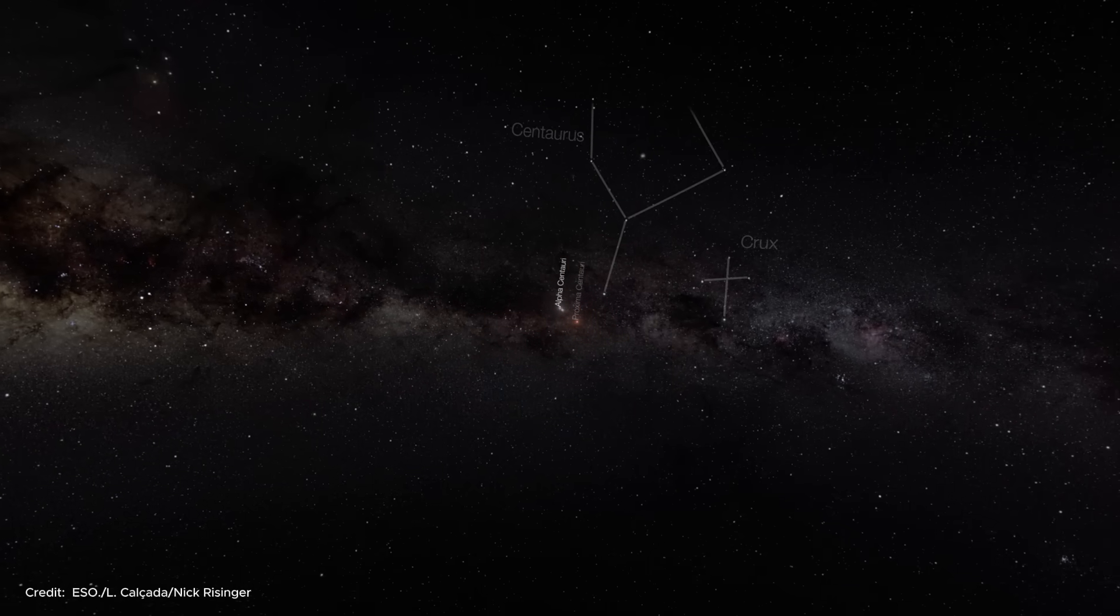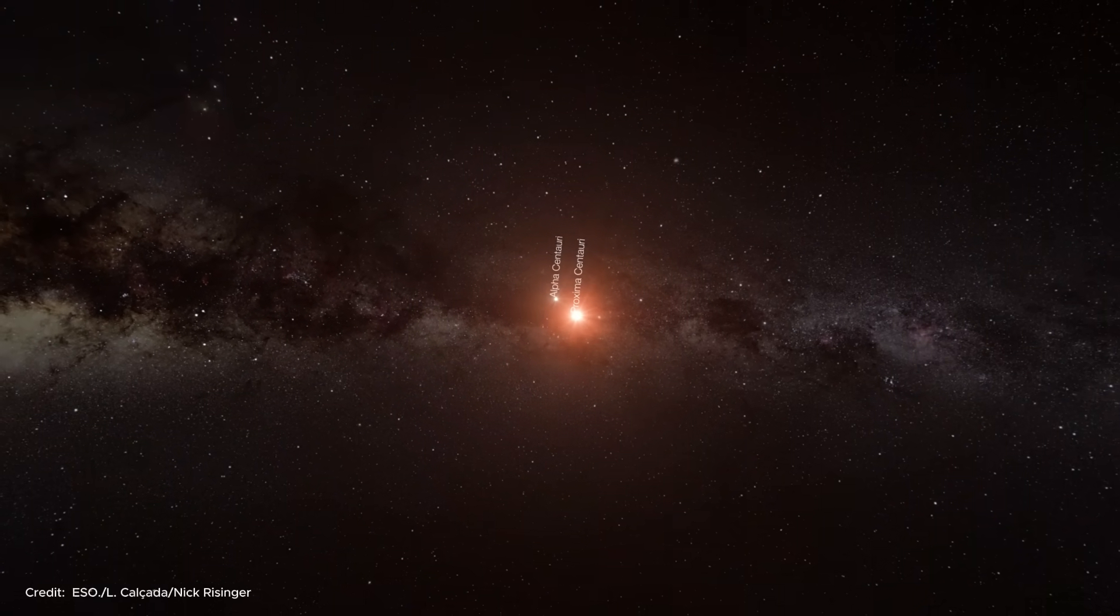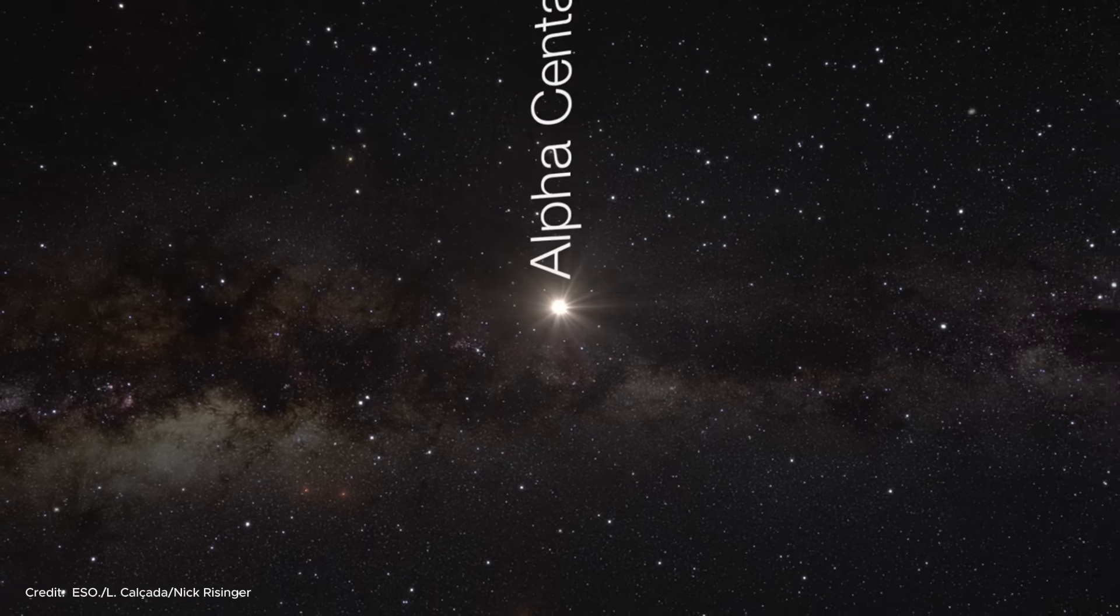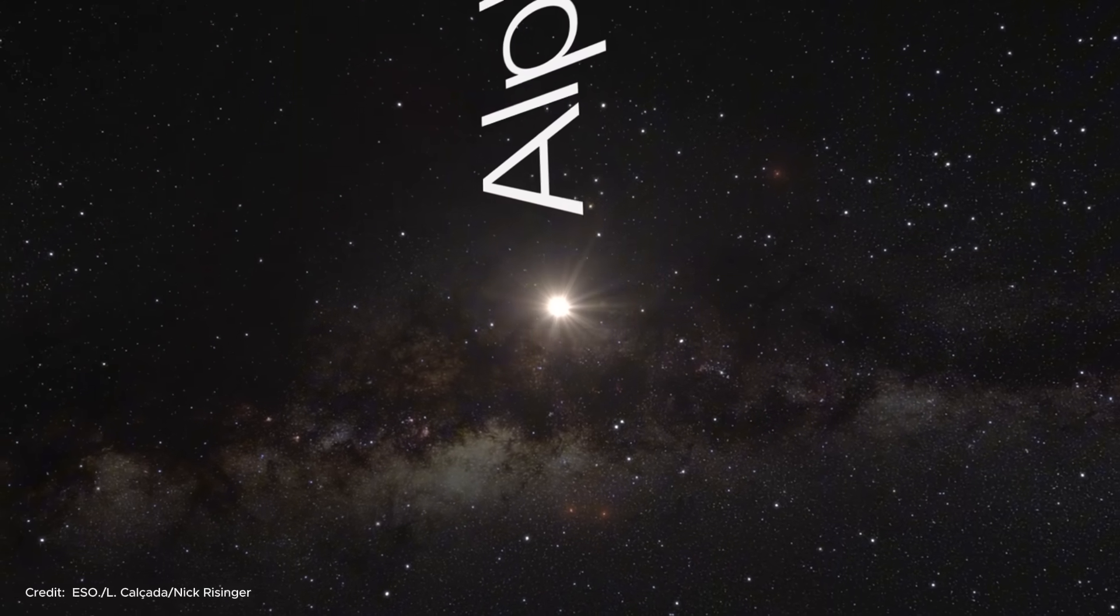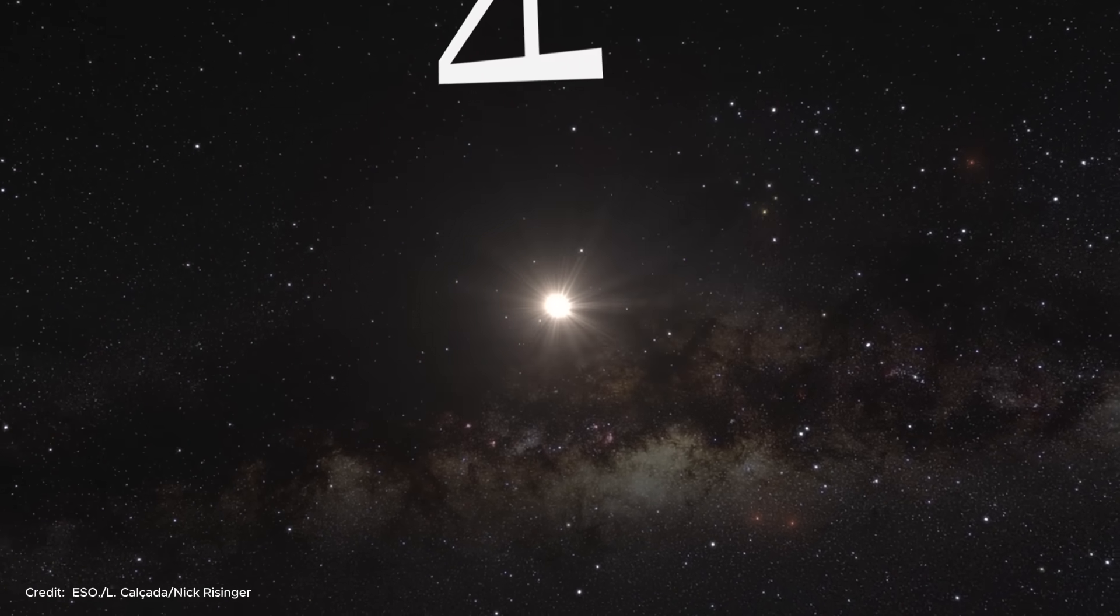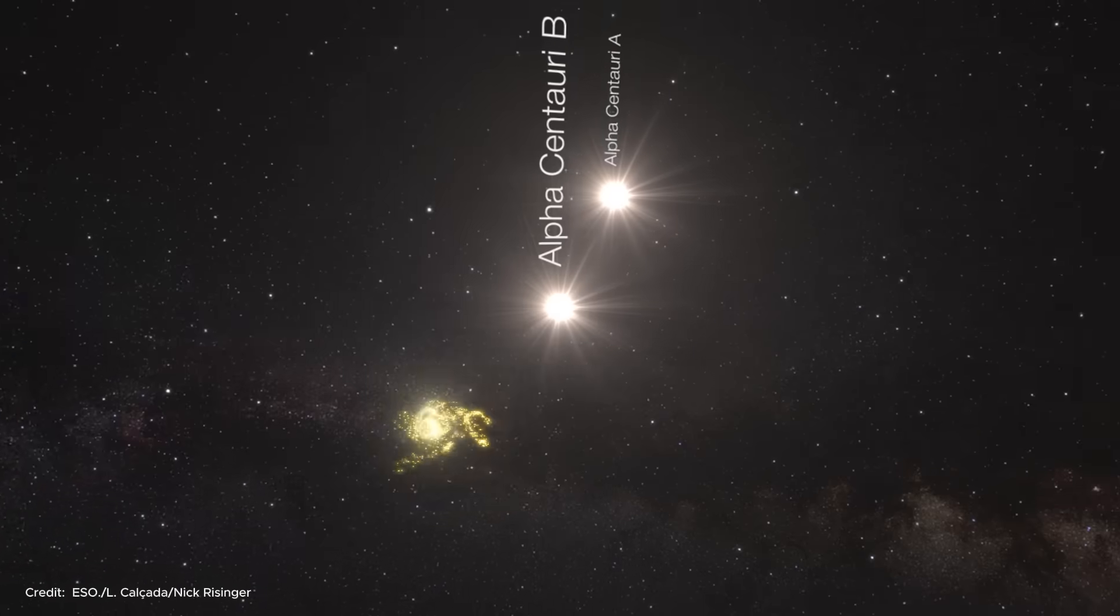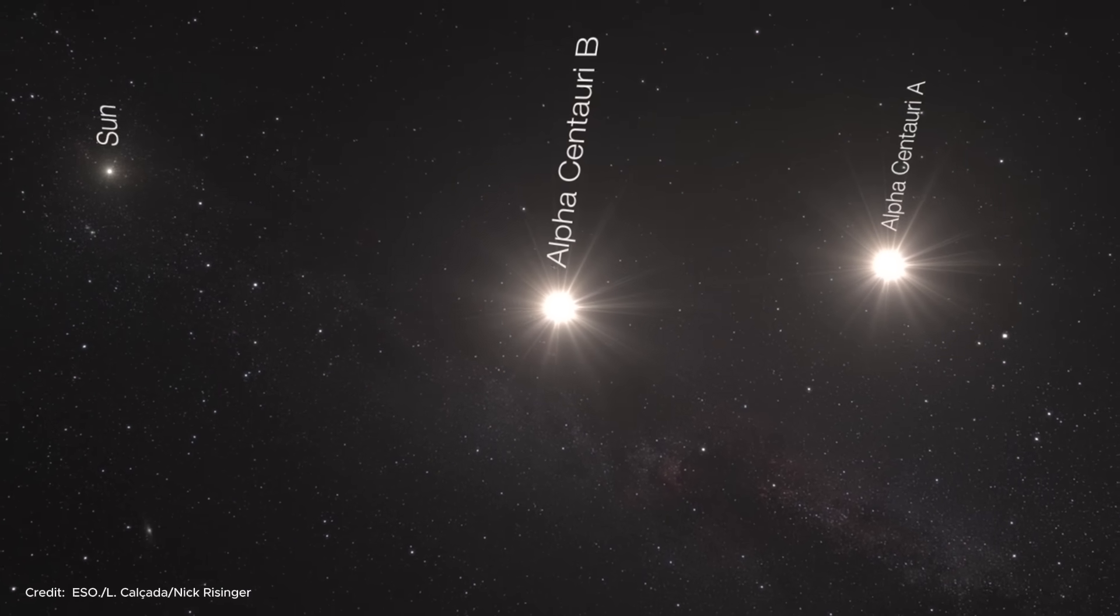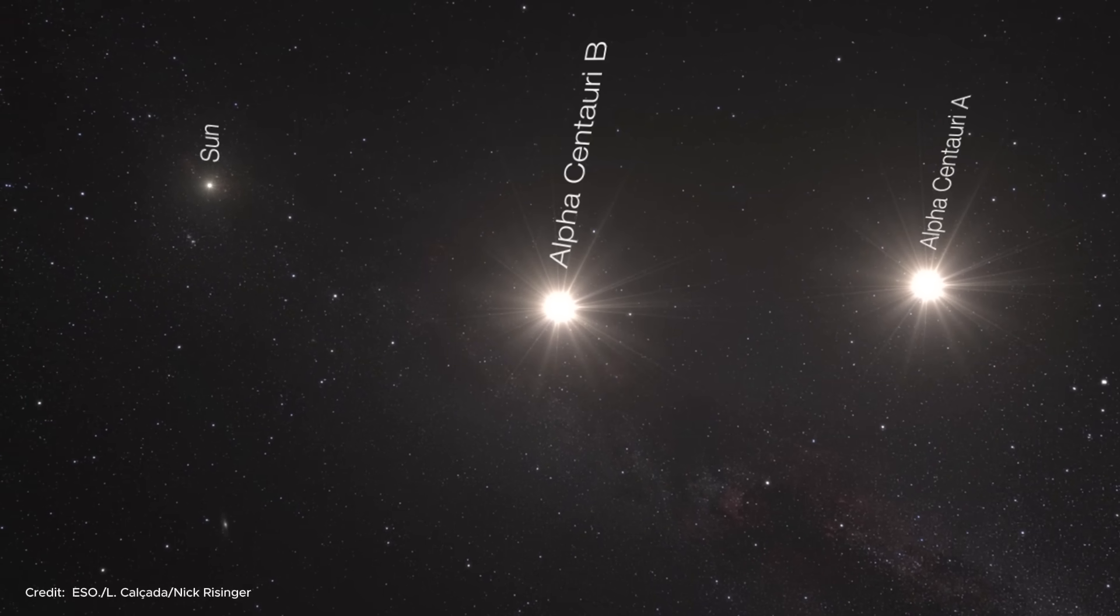Proxima Centauri, the smallest member of the system, is the closest star to the solar system. Proxima Centauri is 4.24 light years away, while the other two stars are 4.37 light years from us. If we visualize this distance, a passenger plane traveling to this star system would take 6 million years. This is such a long distance that even light reaches these stars in a little more than 4 years. In other words, we see these stars as they were about 4 years ago.